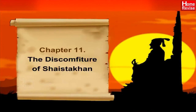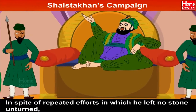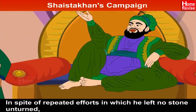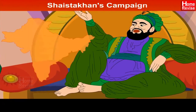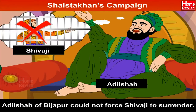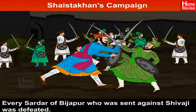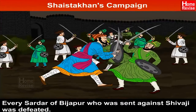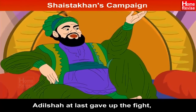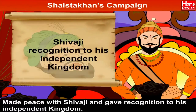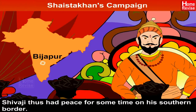Chapter 11: The Discomfiture of Shaistakhan. In spite of repeated efforts in which he left no stone unturned, Adil Shah of Bijapur could not force Shivaji to surrender. Every Sardar of Bijapur who was sent against Shivaji was defeated. Adil Shah at last gave up the fight, made peace with Shivaji, and gave recognition to his independent kingdom. Shivaji thus had peace for some time on his southern border.